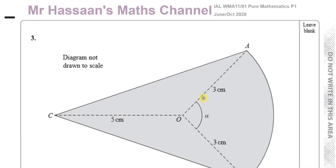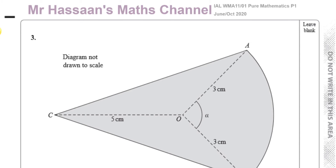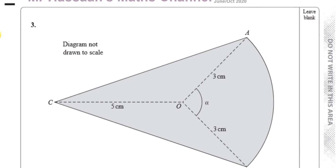Welcome back. This is Mr. Sands Maths Channel. This is question number three from the June/October 2020 International A-Level Pure Mathematics P1 edXL paper. Here we have a question about areas and parameters, radian measure.